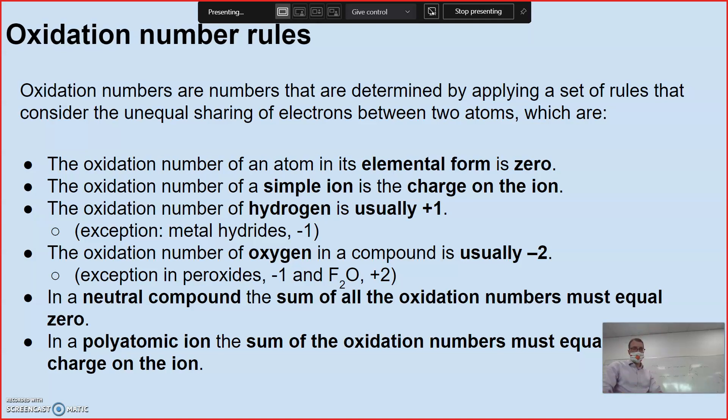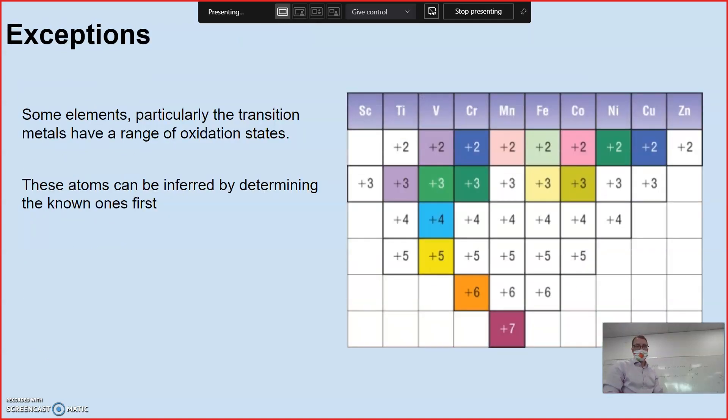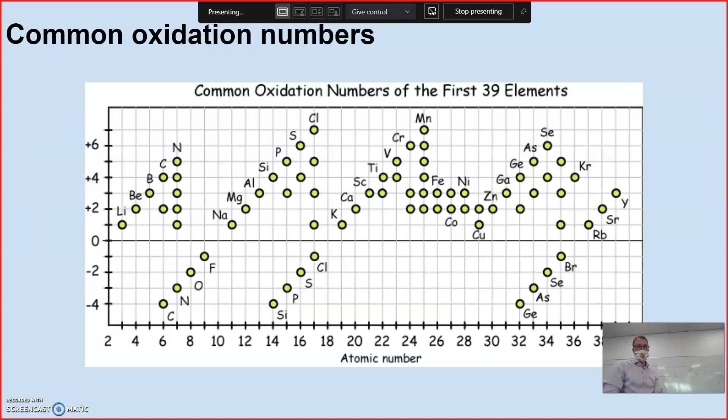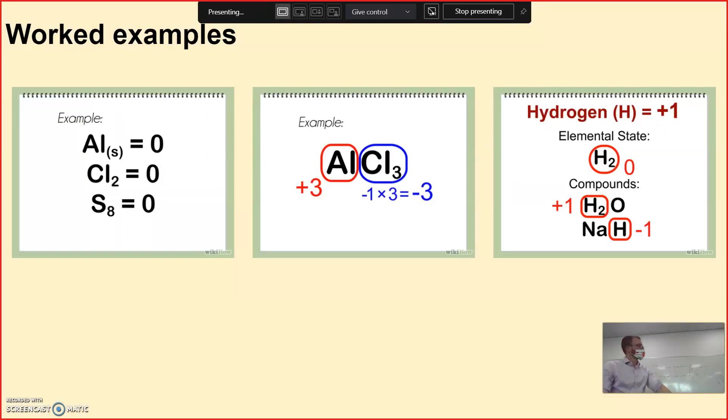Neutral compounds, sum of oxidation numbers must equal to zero. Polyatomic ions, sum must equal to the charge. Not going to worry about exceptions. Common oxidation numbers, right? The group kind of helps us. So group one, plus one. Group two, pretty much all plus two. Group 15, if it's the EID version, so nitride is going to be minus three. Oxide, minus two. Sulfide, minus two. All our halogens usually minus one. A couple of examples. Elemental forms, all zero.